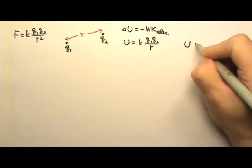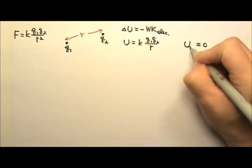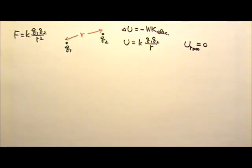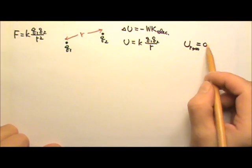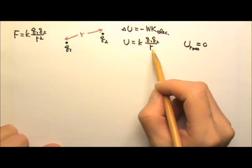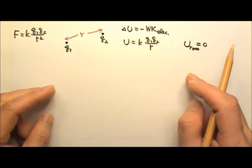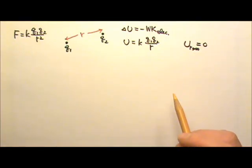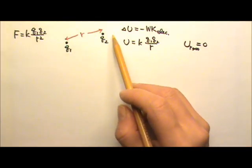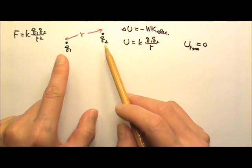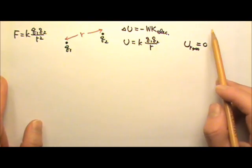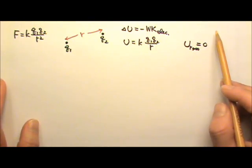So u approaches zero when r approaches infinity. This means that the potential energy is zero when the two charges are infinite distance apart. It's like the reference point ground is infinite distance away, which makes sense because the system has no potential energy when the two charges are very far away from each other and have nothing to do with each other.